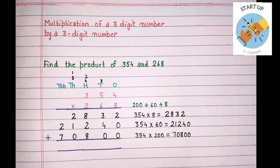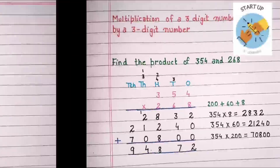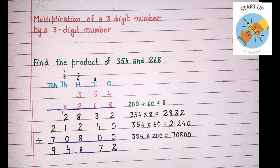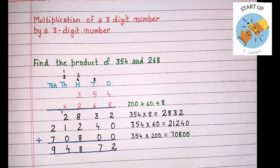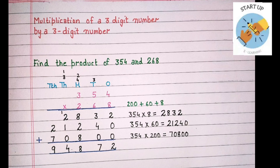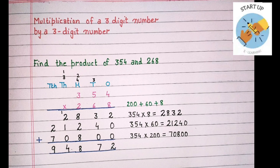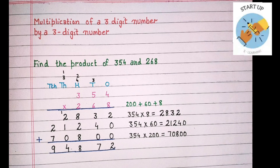To get the final product, we will now add these 3 partial products. 2 plus 0 plus 0 is equal to 2. 3 plus 4 is equal to 7. 8 plus 2 plus 8 is equal to 18, so 8 will be written under the hundreds place and 1 will be carried on to thousands. 2 plus 1 is equal to 3, plus 1 carried over is equal to 4. 2 plus 7 is equal to 9.